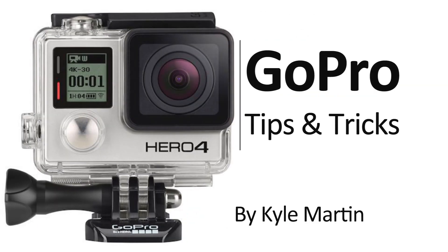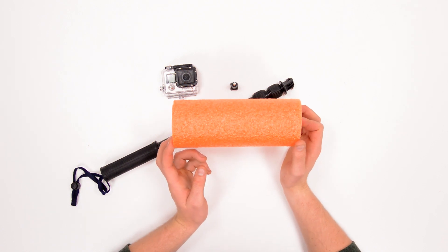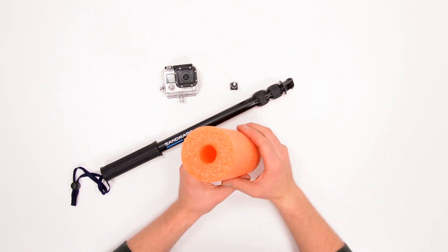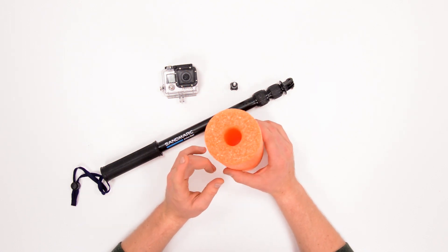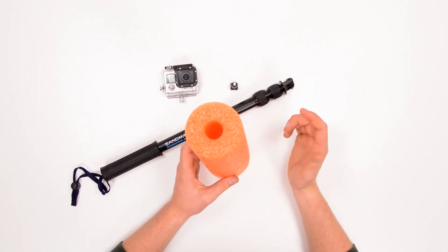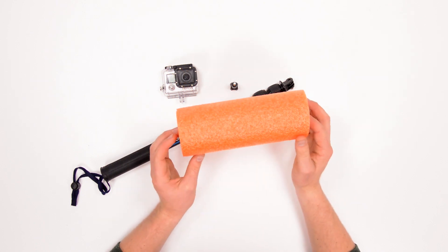To do this we're going to need one thing and that is a piece of pool noodle. Now I've gotten one with a hole in the middle of it and this is really important. So try to find one with a hole in the middle of it because if not you're going to have a hell of a time cutting the hole in the center of it to work.